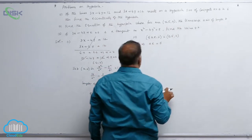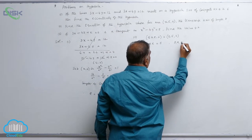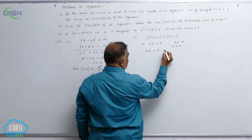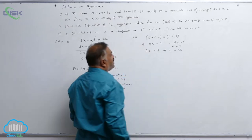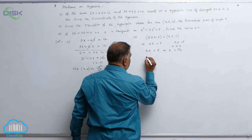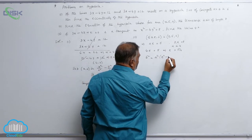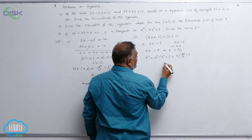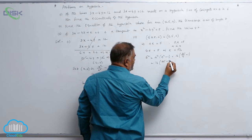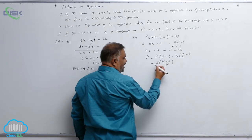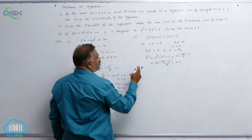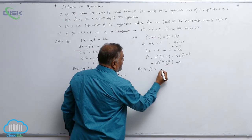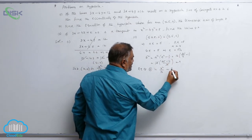The transverse axis has length 8, so 2a equal to 8, giving a equal to 4. Substituting, 4e equal to 5, so e equal to 5 by 4. Now b² equals a² times (e² minus 1), which is 16 times (25/16 minus 1) equal to 16 times 9/16 equal to 9. Therefore the equation of the hyperbola is x² by 16 minus y² by 9 equal to 1.